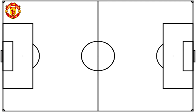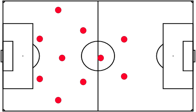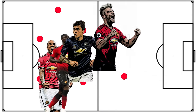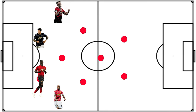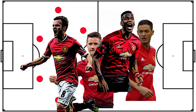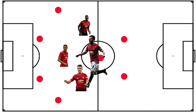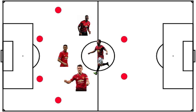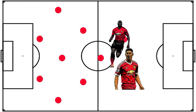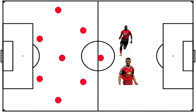The home team lined up in a 4-4-2 diamond, with Young, Bailly, Lindelof and Shaw at the back. Herrera, Matic and Pogba took care of the midfield, with Mata predominantly at the tip of the diamond. Rashford and Lukaku completed the line-up.